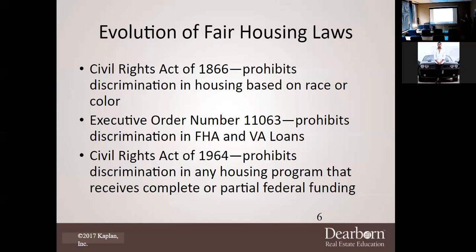A lot of people thought race and color protections came because of Martin Luther King, but actually in 1866 the government established that we cannot prohibit housing based upon race or color. There was also Executive Order 11063, which prohibited discrimination in FHA and VA loans — it wasn't a legislative act, it was a presidential order, so it didn't go through Congress.